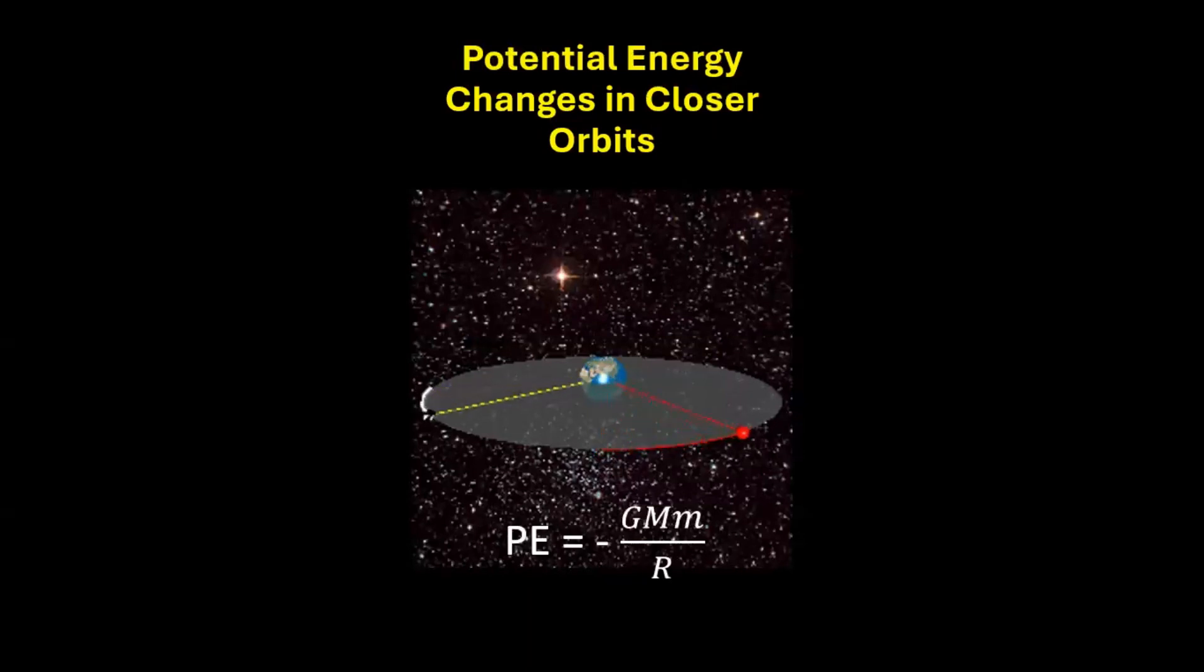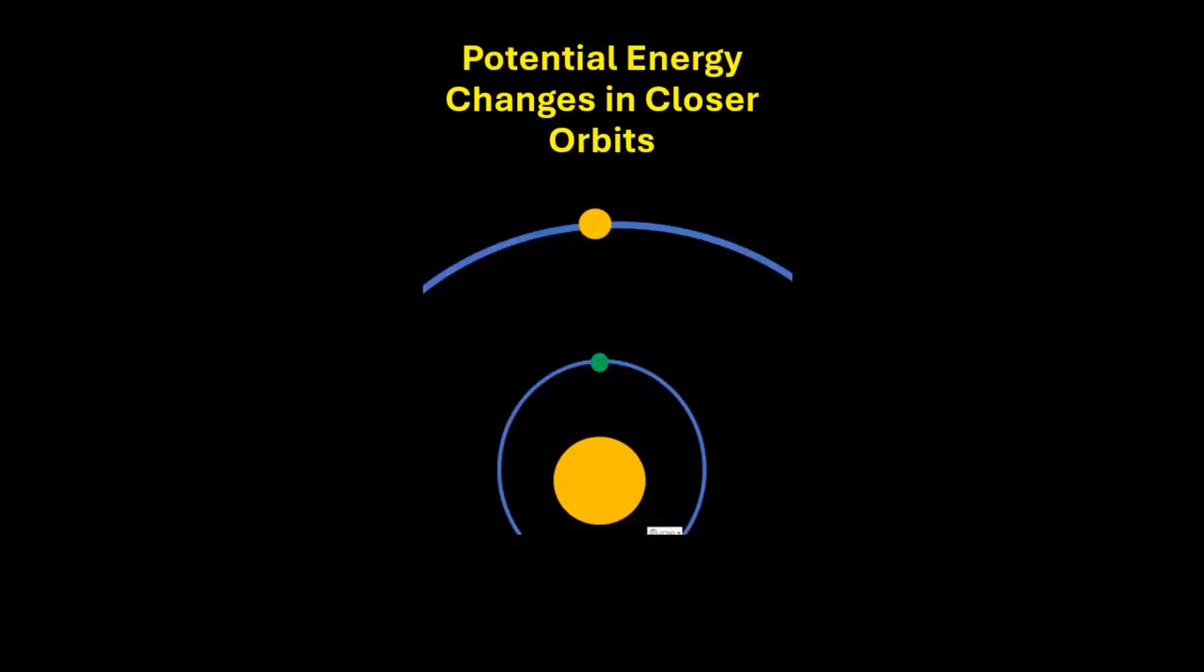On the other hand, potential energy of a satellite is given as minus GMm over R. So if the distance to the satellite reduces, there is a significant drop in the potential energy. That is, potential energy reduces in an orbit closer to the Earth.